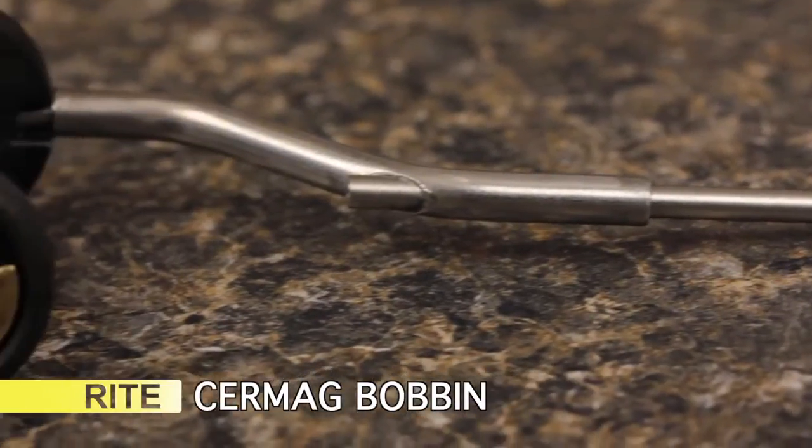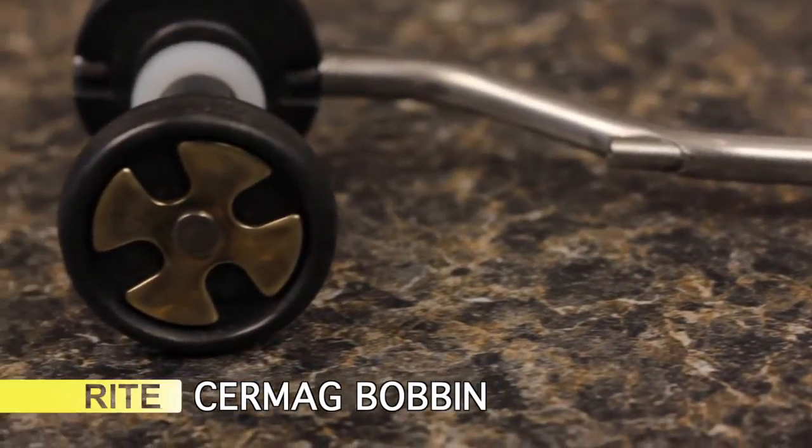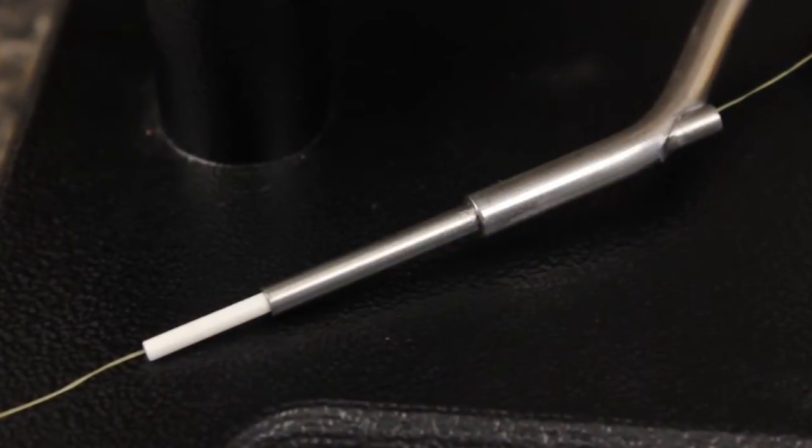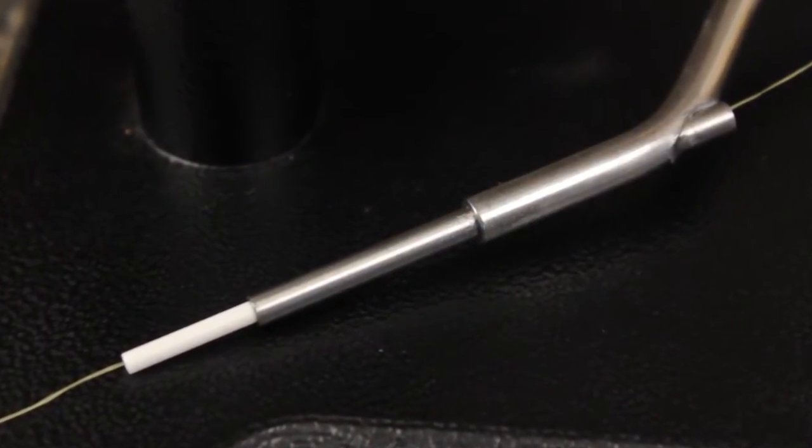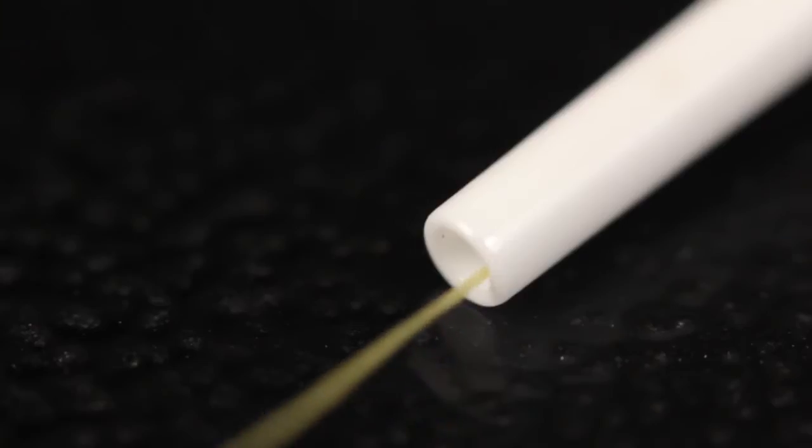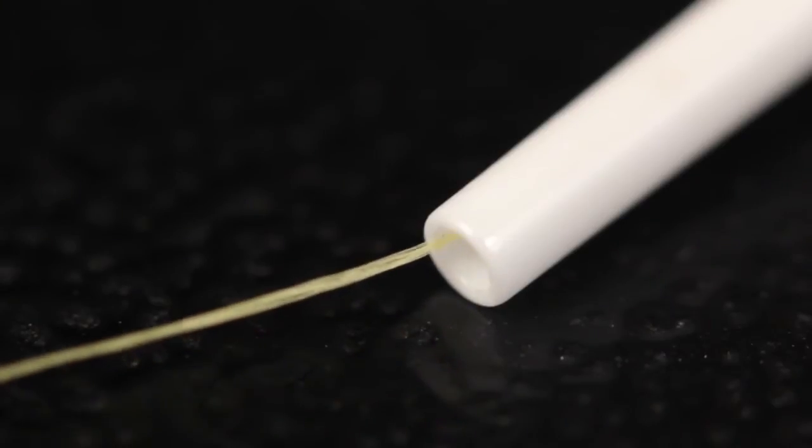The Wright Cermag bobbin is our most popular bobbin for tying larger patterns. Its 2.5 inch, extremely durable ceramic insert provides tyers longer reach and greater thread torque, yet still protects the finest threads and flosses.